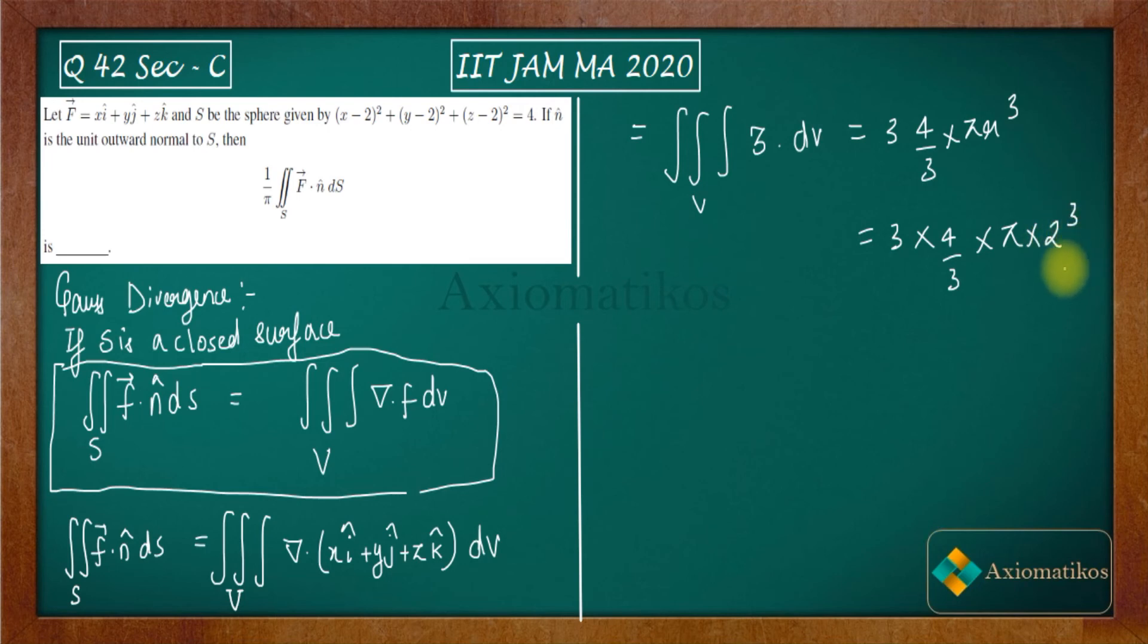So two cubed means eight. So three will be canceled by this three. So you will get 32 pi.